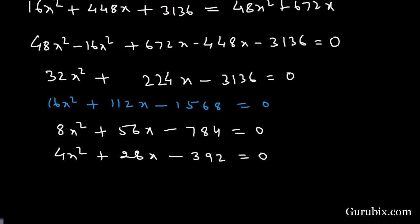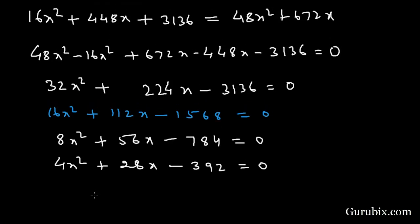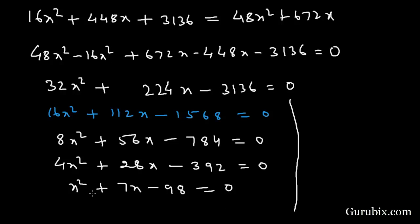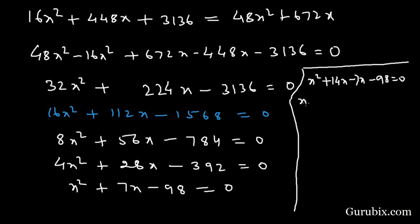Dividing both sides by 8 gives X squared plus 7X minus 98 equals 0. Now we shall factorize this: X squared plus 14X minus 7X minus 98 equals 0.